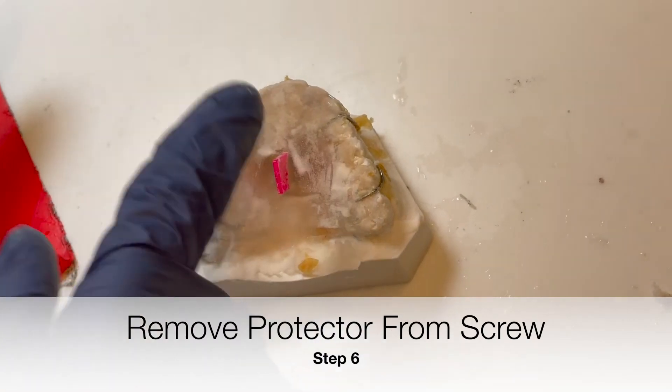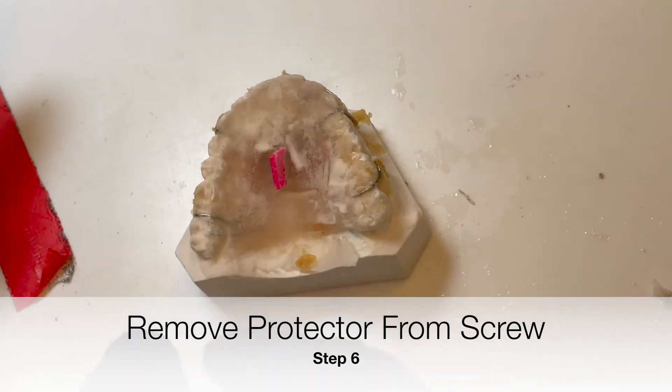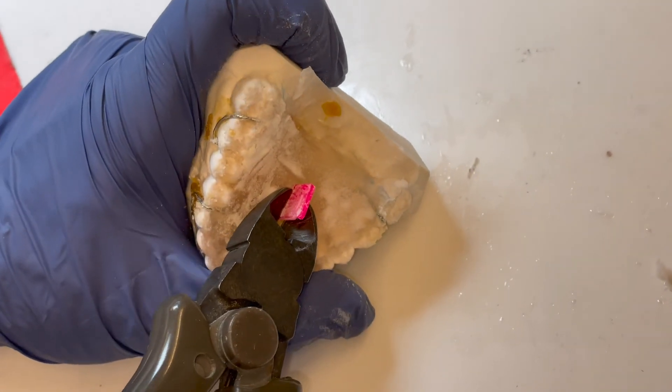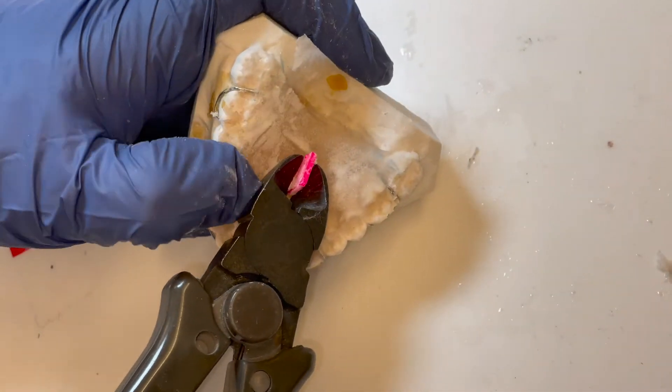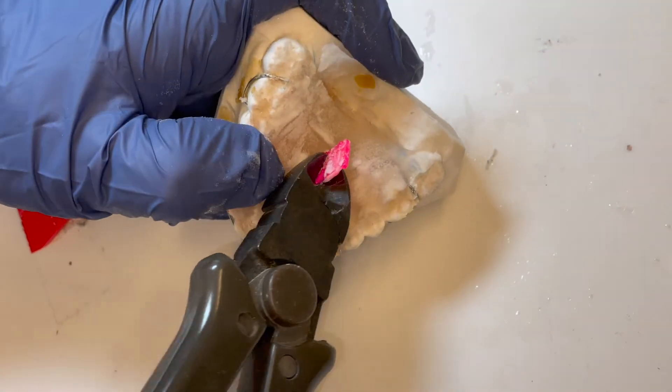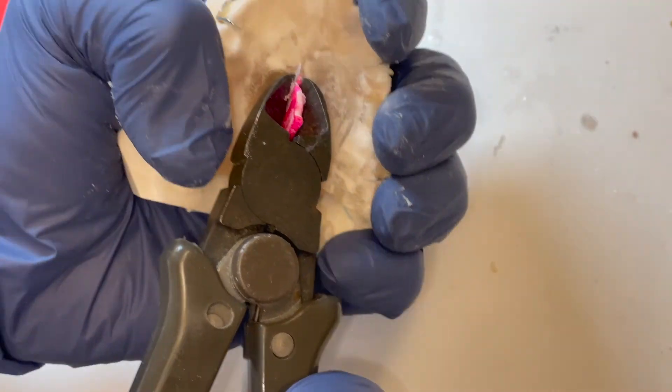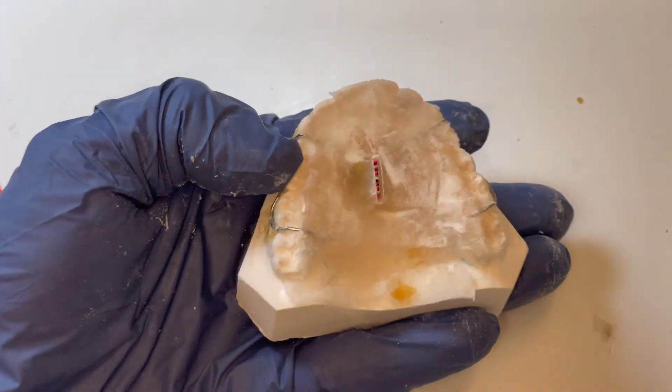To remove the rubber seal from the expansion screw, we're going to use our wire cutter or you can use a plier. And we're going to gently peel it off. If you did it properly, you should be able to see the expansion screw underneath.